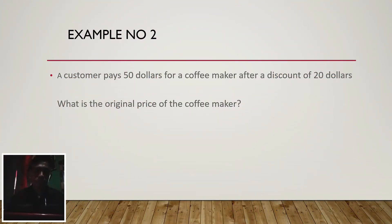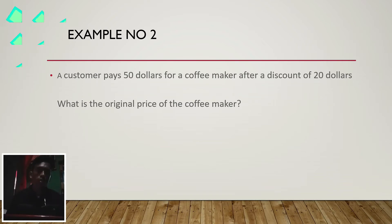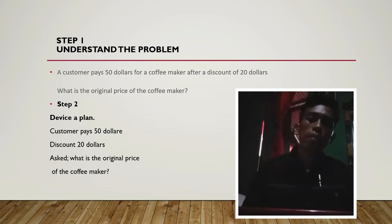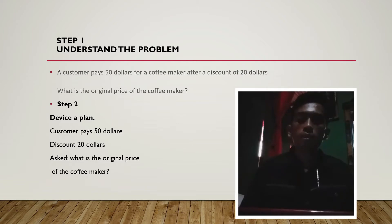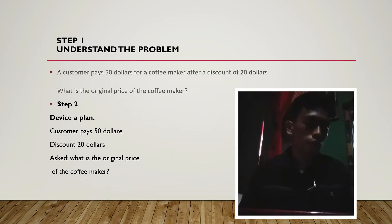I have here Example 2. Let's try to answer this. A customer pays $50 for a coffee maker after a discount of $20. What is the original price of the coffee maker? Again, we will use the 4 steps. Step 1, understand the problem: the customer pays $50 for a coffee maker after a discount of $20. Step 2, devise a plan — we will break down the problem: customer pays $50, discount is $20, and we are asked for the original price.